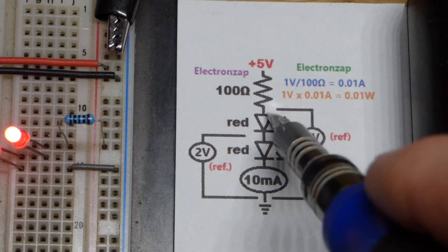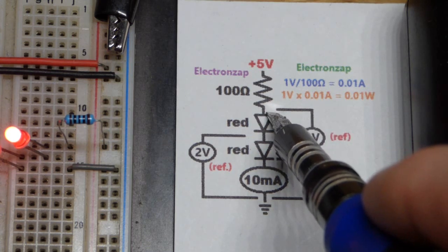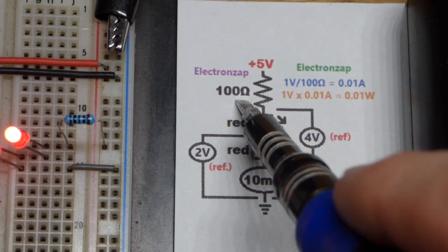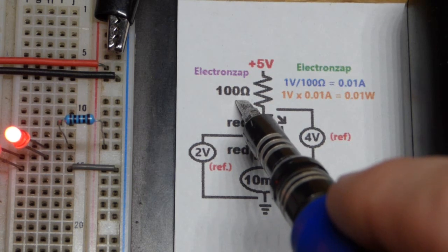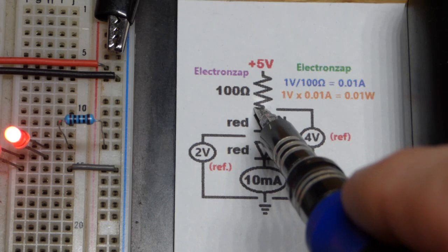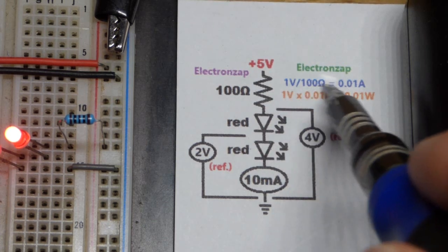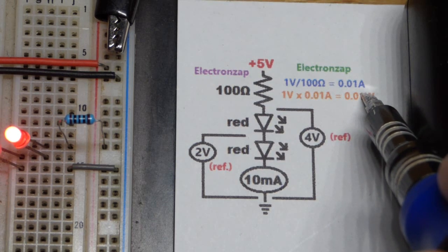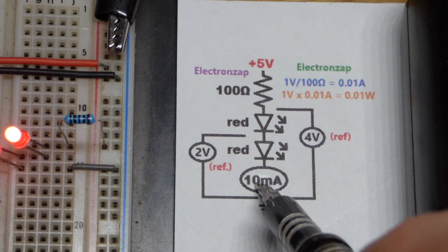Two of them in series, they total about four volts that they are dropping. So we have about one volt across the 100 ohm resistor, because out of that five volts we lost four volts. One volt across it gives us 0.01 amps, which is the same as 10 milliamps of current there.